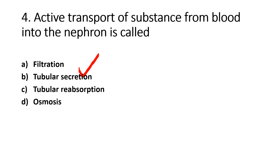Tubular Secretion: Hydrogen ions and potassium ions are transferred from blood to the renal tubule via active transport. This process is called Tubular Secretion. Glomerular Filtration is a passive process.